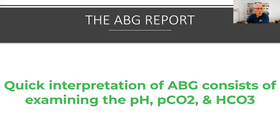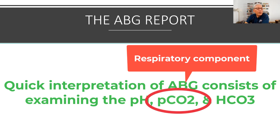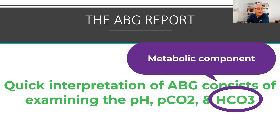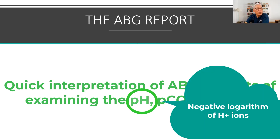To analyze ABGs, let's focus on the pH, the PCO2, and the bicarb. The PCO2 evaluates the respiratory status of the patient, the bicarb is the metabolic component of acid-base, and the pH reflects the amount of hydrogen present in the blood.